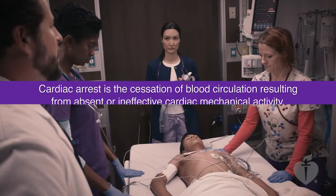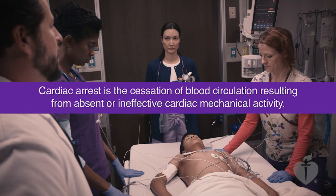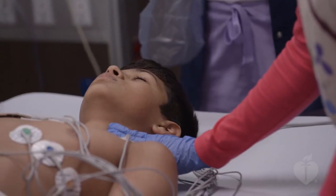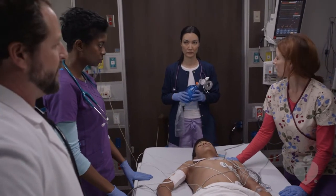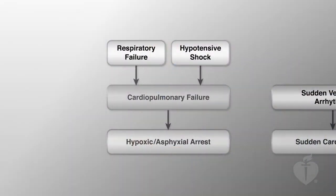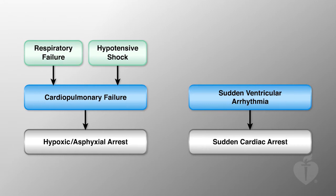Cardiac arrest is the cessation of blood circulation resulting from absent or ineffective cardiac mechanical activity. Clinically, the child is unresponsive and not breathing or only gasping, and there is no detectable pulse. There are two general pathways that children take to develop cardiac arrest. The most common pathway is primarily due to the progression of respiratory failure or hypotensive shock, which will progress to cardiac arrest if unrecognized, untreated, or unresponsive to medical therapies. The other pathway is sudden ventricular arrhythmias leading to acute cardiac arrest. Unlike in adults, this pathway is very uncommon in children; it is far more likely for children to have cardiac arrest due to progressive respiratory failure or hypotensive shock.